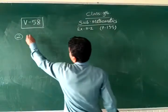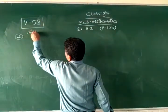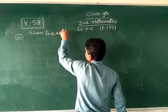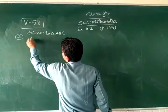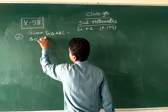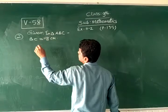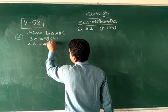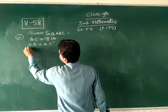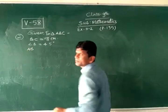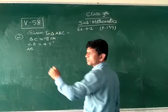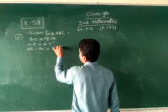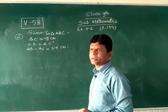One minute wait. We have given in triangle ABC in which BC is equal to 8 cm, angle B is equal to 45 degrees, and AB minus AC is equal to 3.5 cm. Got it? Sit down.